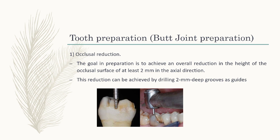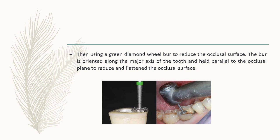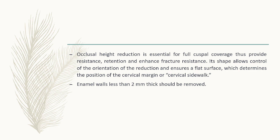For the preparation — which we call the butt joint or cervical sidewall — we first perform occlusal reduction. The goal is to achieve an overall reduction in the height of the occlusal surface of at least 2 mm to provide proper thickness for the endocrown in the axial direction. This can be achieved by drawing 2 mm deep guide grooves, then using a green diamond wheel bur to reduce the occlusal surface, oriented along the major axis of the tooth, to flatten the occlusal surface and provide full cuspal coverage, which enhances fracture resistance.